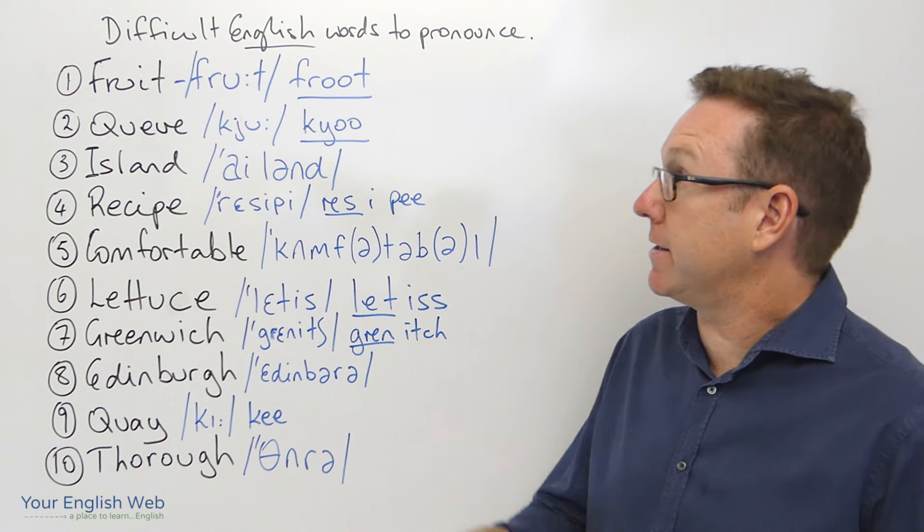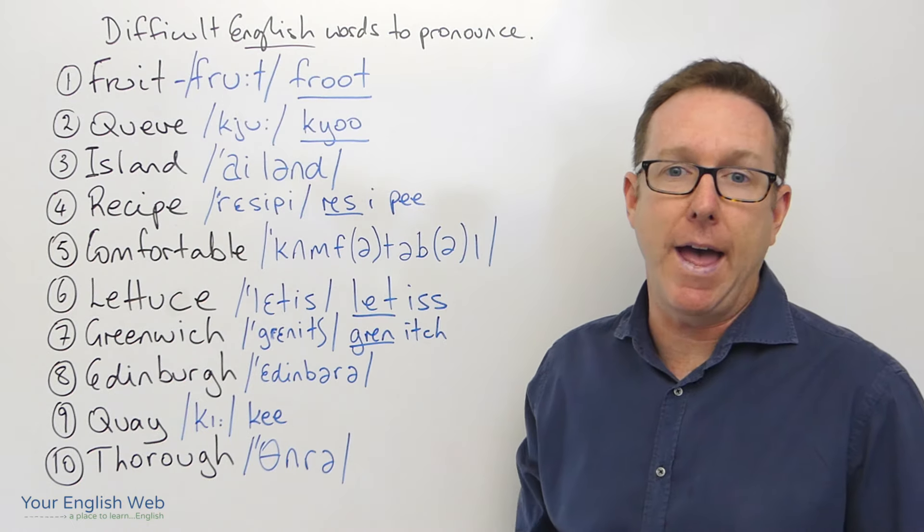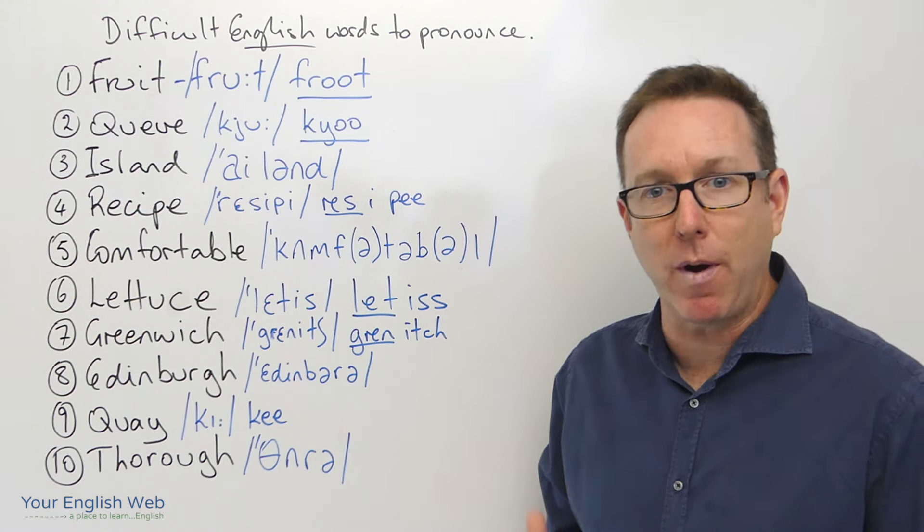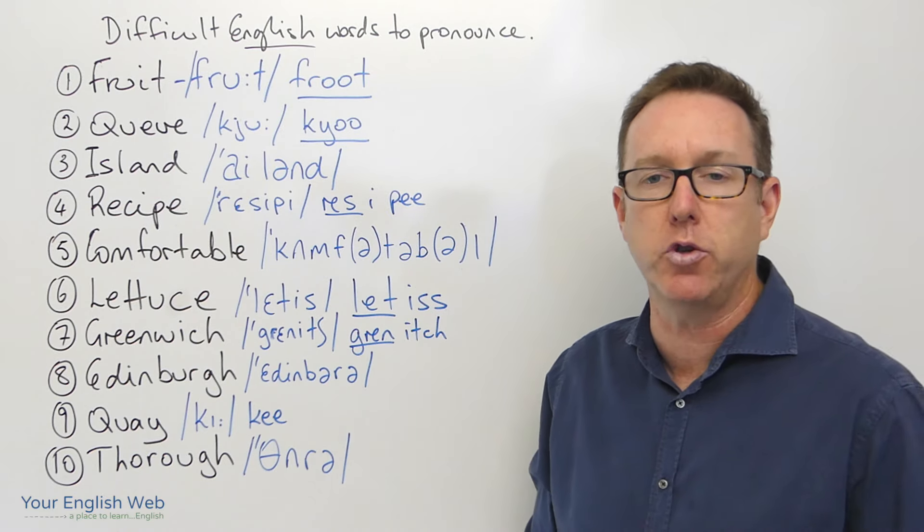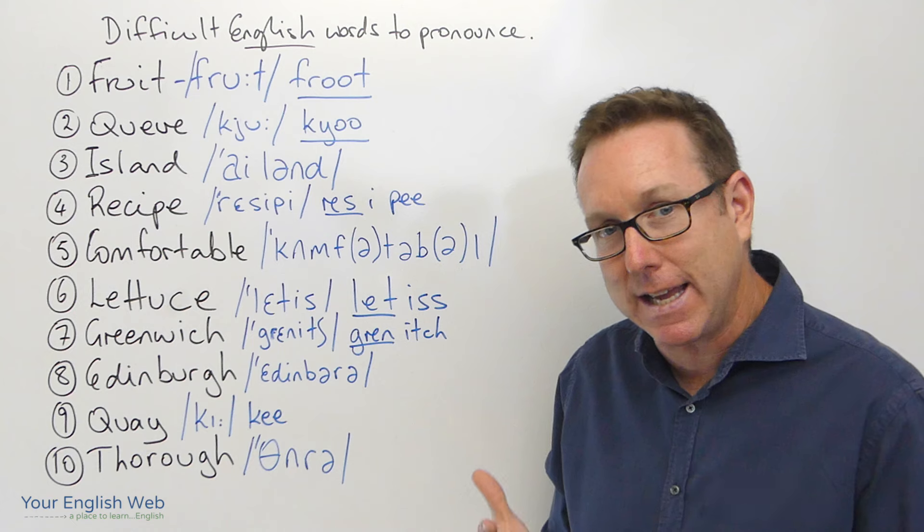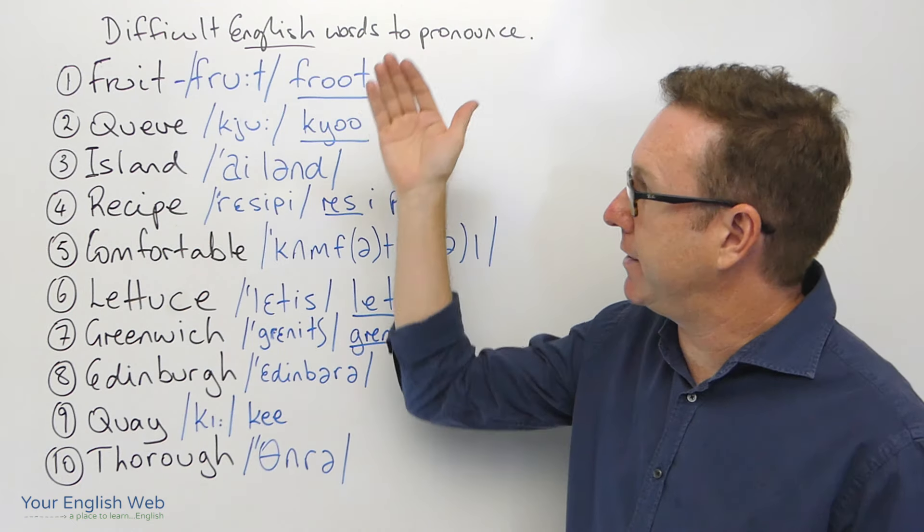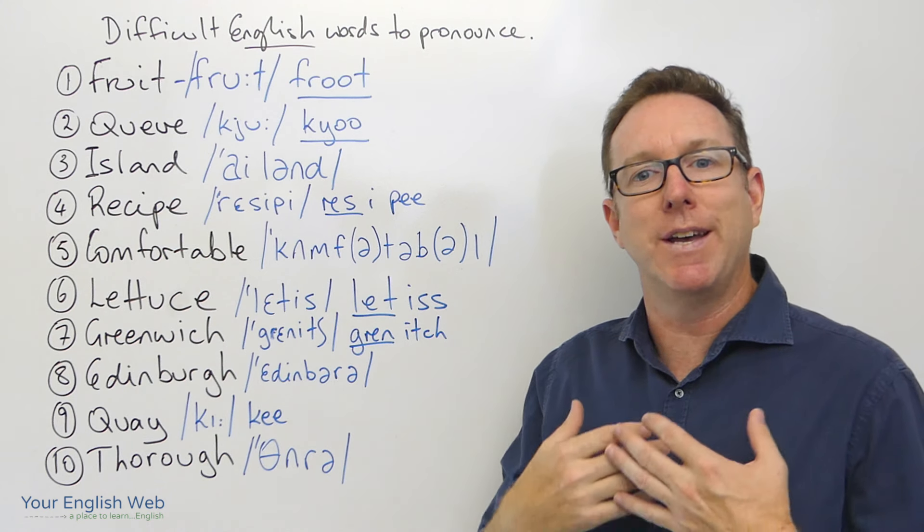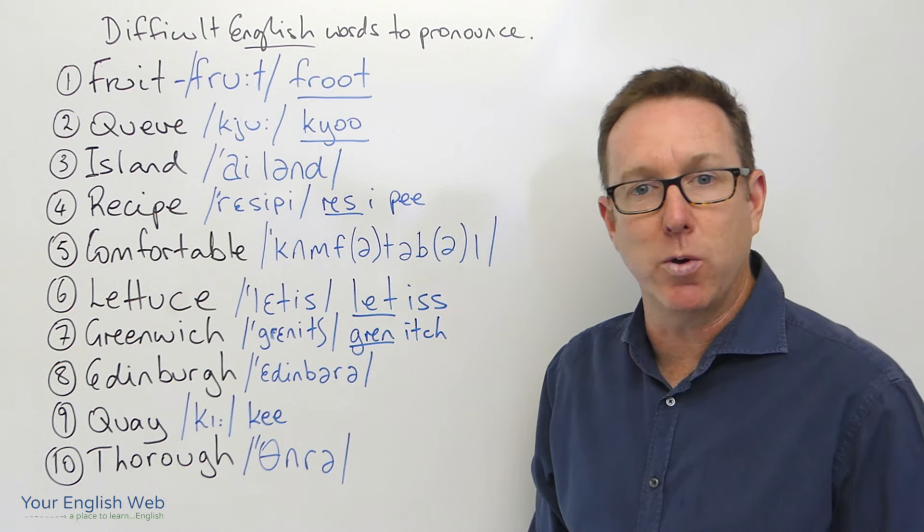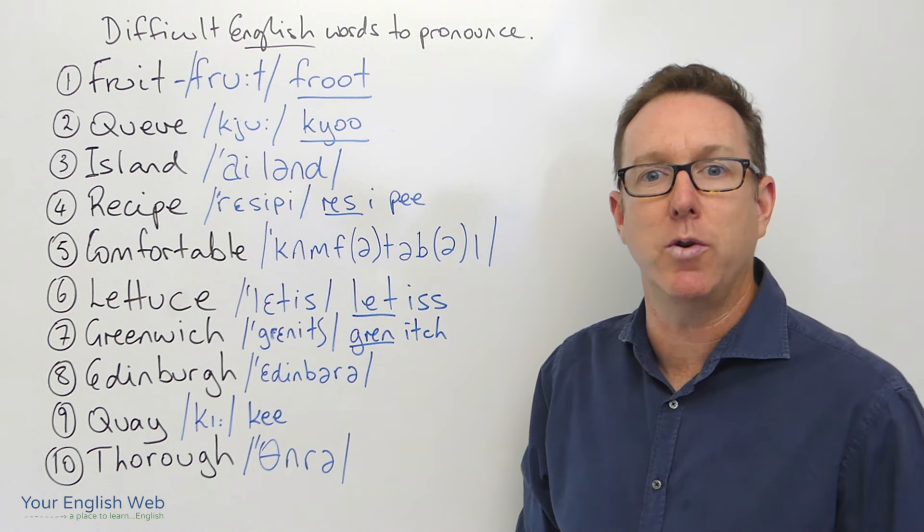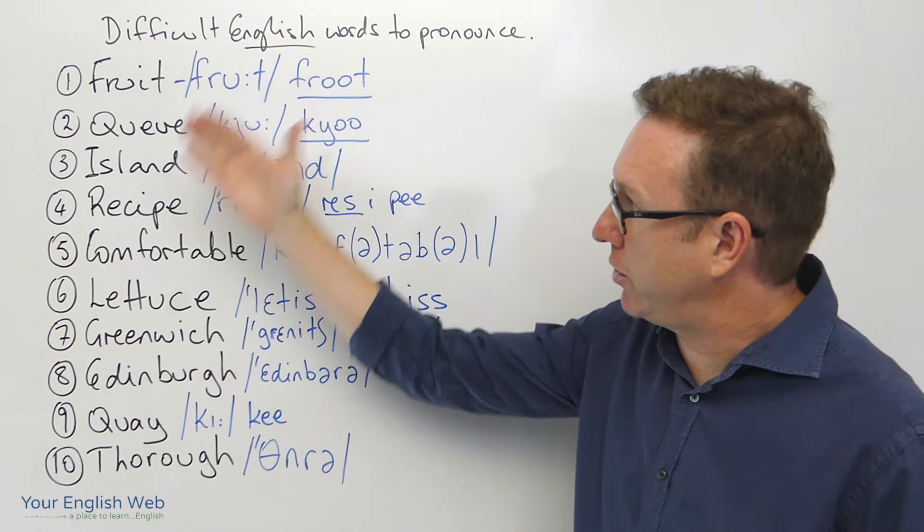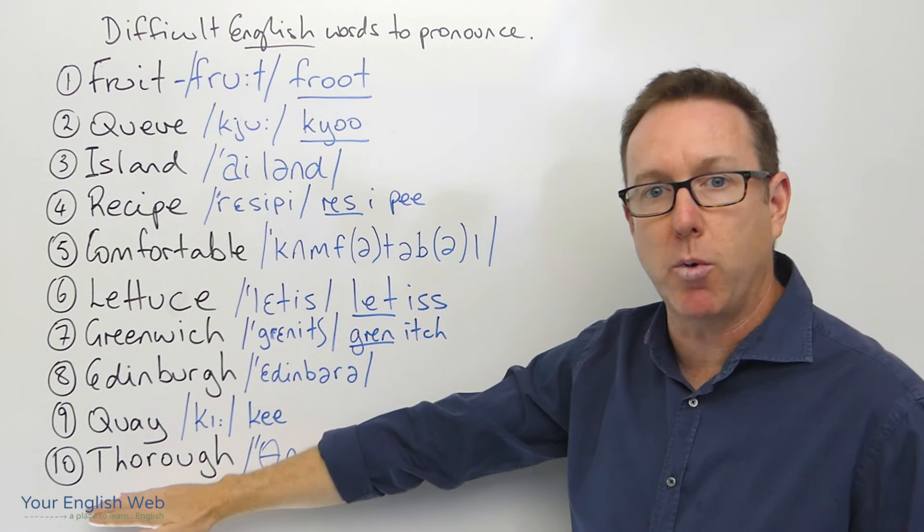As I said, today's lesson is looking at difficult English words to pronounce, especially for you learners of English, whether you come from a different language background. Some of these words are easier or more difficult for you to pronounce, depending on which language you speak and the sounds that you're able to make easily. We'll look at difficult words that we need to pronounce correctly to make ourselves understood by native speakers and for speaking exams. We have 10 words. We'll start with some easy ones and go down to some of the more difficult words.